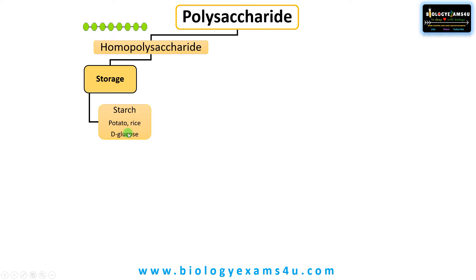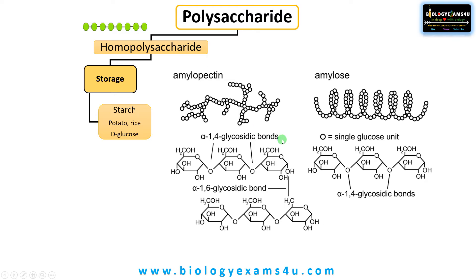The first storage homopolysaccharide is starch, the storage food in plants. It is made up of two components: amylose, a linear chain, and amylopectin, which has many branching points. In the linear chain there is alpha-1,4 glycosidic linkage, while amylopectin has both alpha-1,4 and alpha-1,6 glycosidic linkages at branching points. Its semi-crystalline structure allows efficient energy storage and controlled glucose release. Present in rice, plants, cereals, etc.